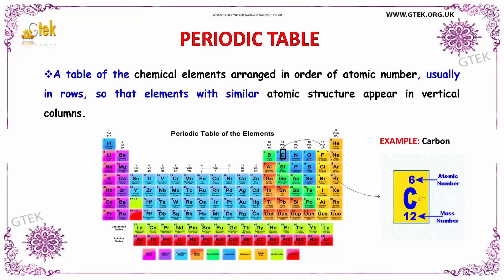Here we have a depiction for carbon specifically. The atomic number of carbon is 6, whereas the mass number for carbon is 12. These chemical elements are arranged in terms of rows, so that elements with similar atomic structure appear in the vertical columns.